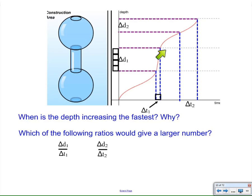And that is, when the graph is really steep, that means that the depth is increasing quickly, so it's fast. And when the graph is not very steep, it means that the depth is increasing slowly, not very fast.